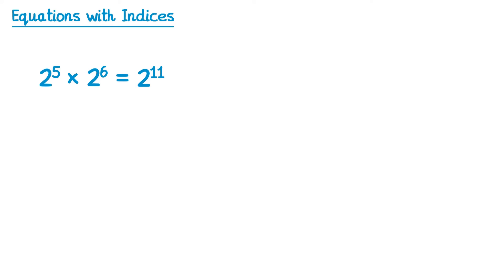You've also got the division rule. So 2 to the 12 divided by 2 to the 3 — in this case you subtract the powers, so 12 take away 3 is 9, so the answer is 2 to the power 9.